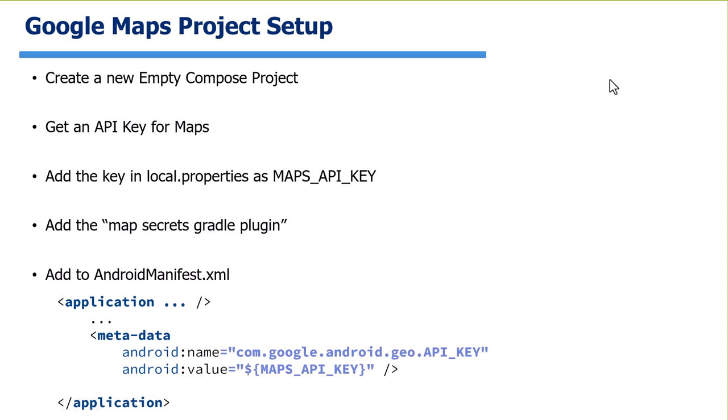The general setup involves creating an empty Compose project, getting the API key, and putting it in your local.properties file. The local.properties file isn't checked into your repo, so it just exists for you. Anyone who checks out the project will need to create their own key. To make this work, we'll use the MapSecrets Gradle plugin, which fetches that key and puts it inside the manifest so you can use it to fetch map data. In the manifest, you reference the key using $mapsApiKey, which pulls it from local.properties.